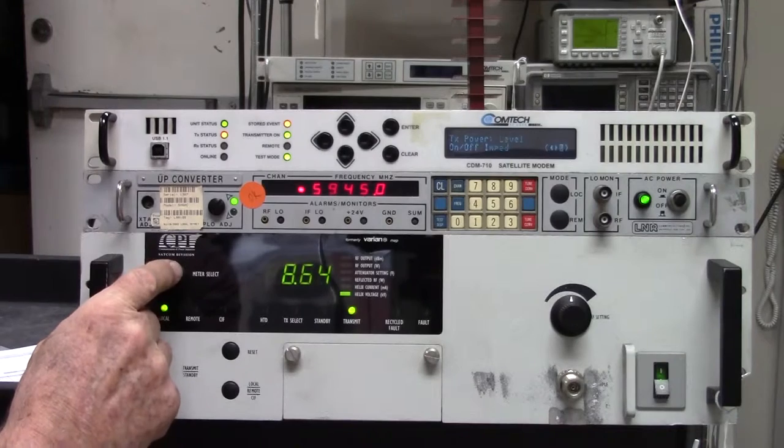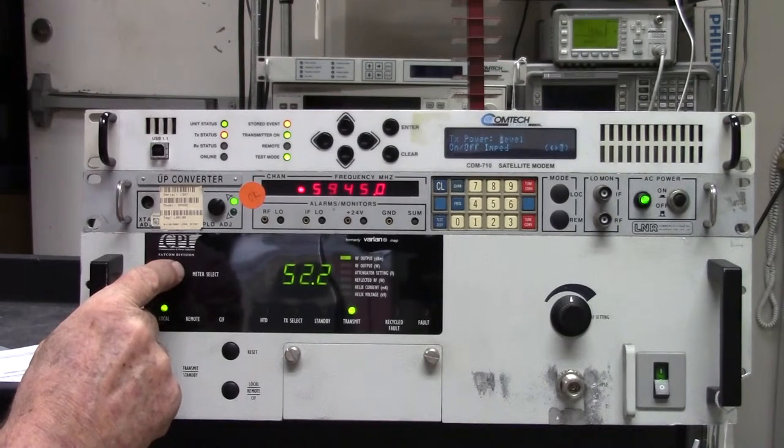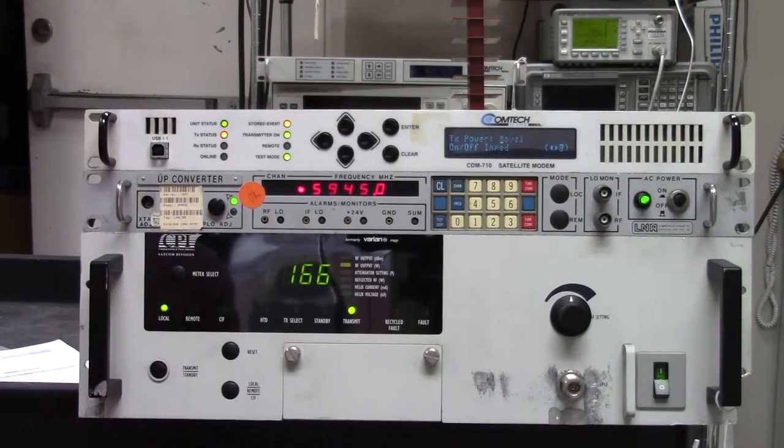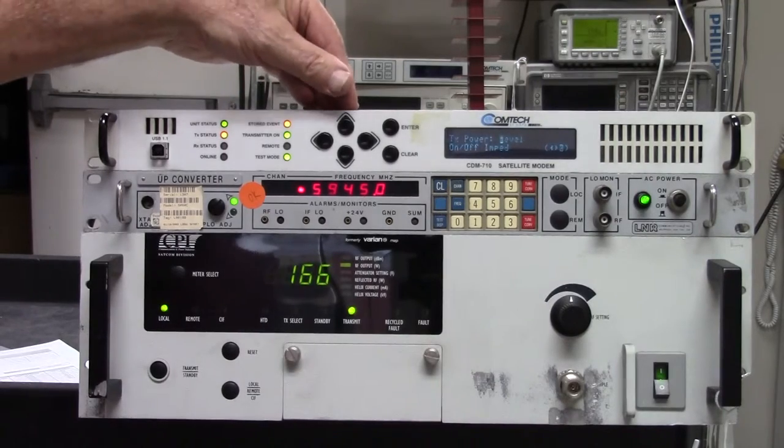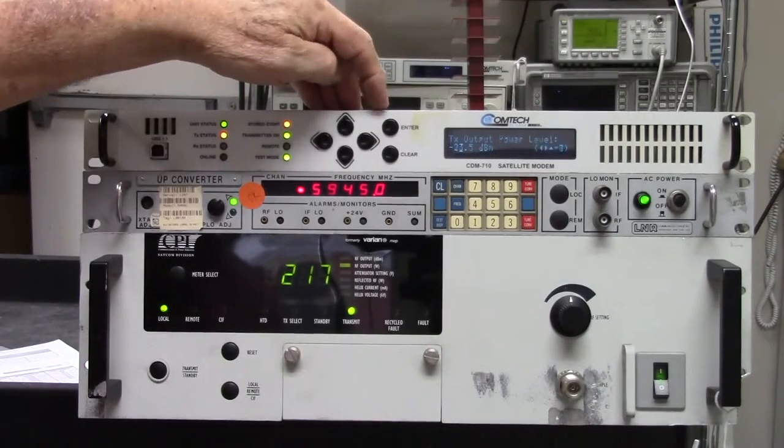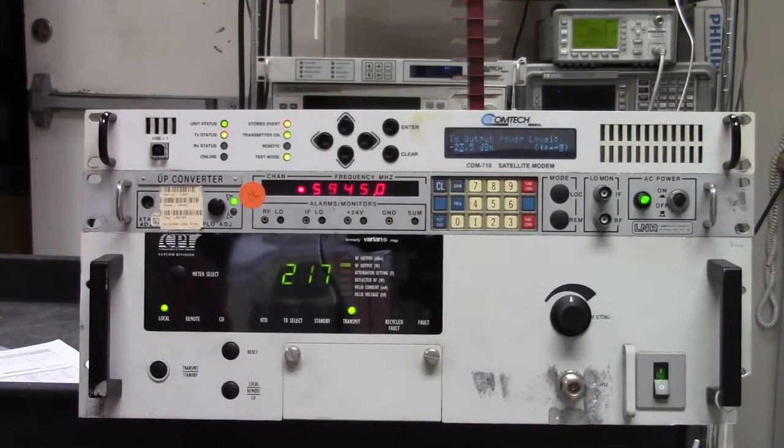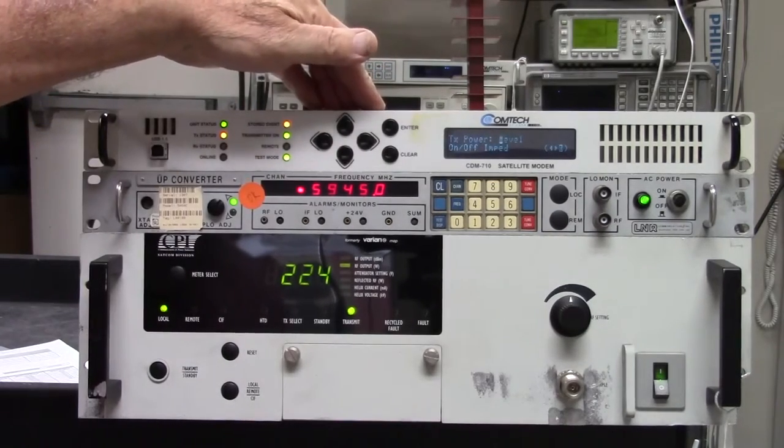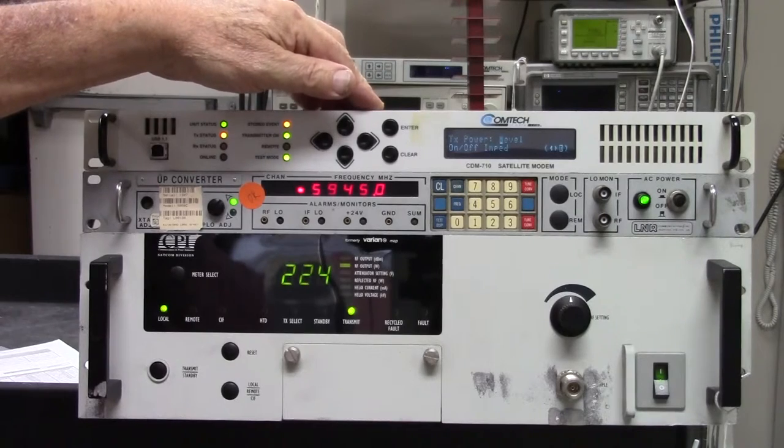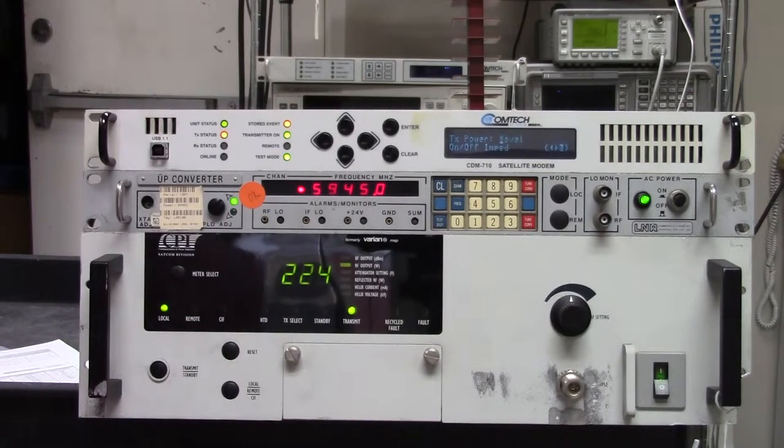Now we're going to go back to the output. That's in dBm. Output in watts, 166. I'm going to bring it up some more. Notice that as I press the increase, this value goes down. That value goes down because it's an attenuation. It's not really a power level. 224, which is just about right.